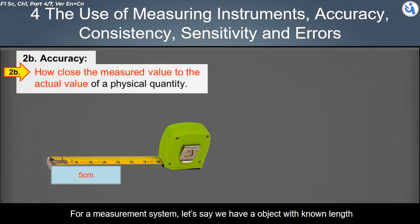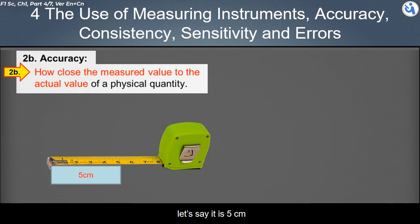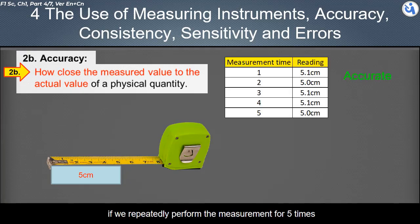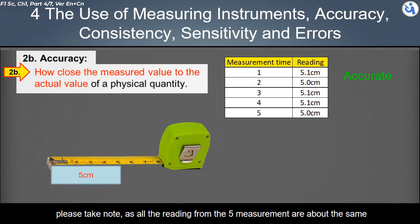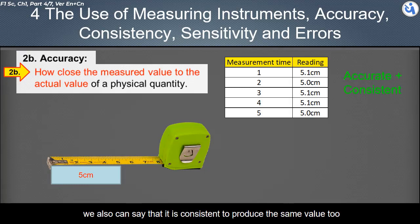For a measurement system, let's say we have a object with known length of 5 cm. If we repeatedly perform the measurement for 5 times and we able to get 5 cm for each time we do the measurement, we can say that the measurement system is accurate and consistent. Please take note, as all the reading from the 5 measurement are about the same, we also can say that it is consistent to produce the same value too.